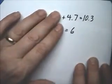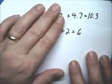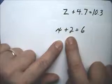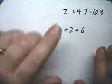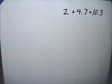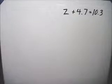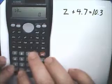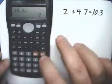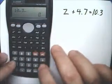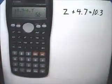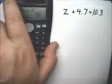Well, this is the same thing, except instead of 6 take away 2, we have to do 10.3 take away 4.7. So, 10.3 take away 4.7 is 5.6.